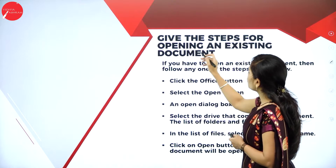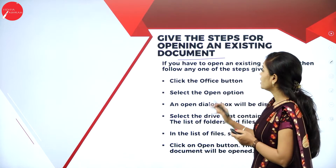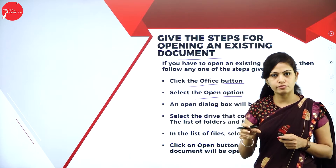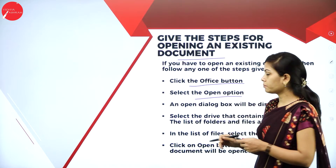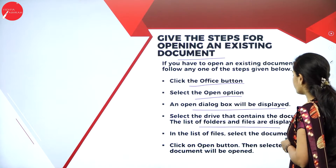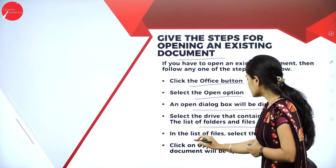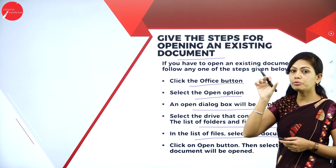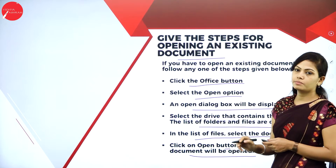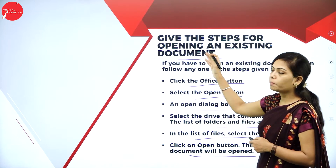Next: give the steps for opening an existing document. First step, click the Office button and select the Open option. You will get many recently used files. Click on the particular file name and an Open dialog box will be displayed. Select the drive that contains the document — the list of folders and files will be displayed. Select the document name you want to open, click on the file name, and click the Open button. The selected document will then open.